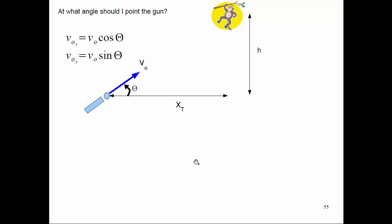Next time we'll show a demonstration: if you're a forest ranger and there's a sick monkey, you need to shoot it with a dart. As soon as you fire the gun, the monkey gets scared and lets go. To hit the monkey with the dart so you can put it to sleep and take care of it, we need to know at what angle to launch it. I'll show a demonstration of that in class or in the Zoom lecture.